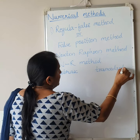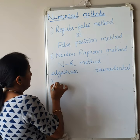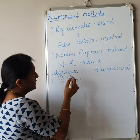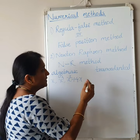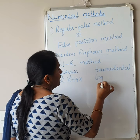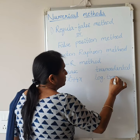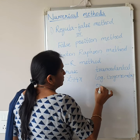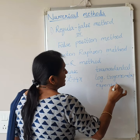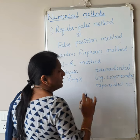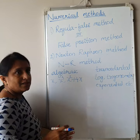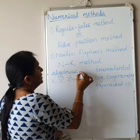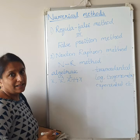Algebraic equations contain terms like X, X cubed, X squared plus 4X, and so on. Transcendental equations are equations containing logarithm terms, trigonometric terms, or exponential terms. By using these two methods, we can find the roots of algebraic as well as transcendental equations.